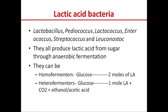Lactic acid bacteria have a role in making good quality silage. The lactic acid bacteria involved are: Lactobacillus, Pediococcus, Lactococcus, Enterococcus, Streptococcus, and Leuconostoc. They all produce lactic acid from sugar present in the crop through anaerobic fermentation.